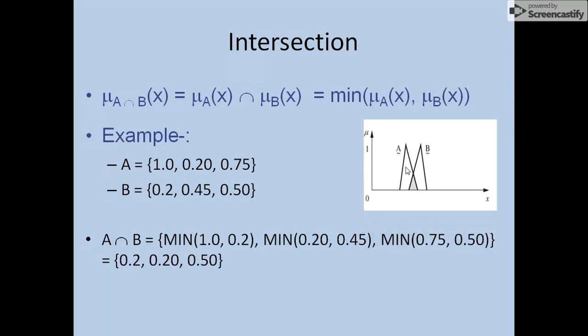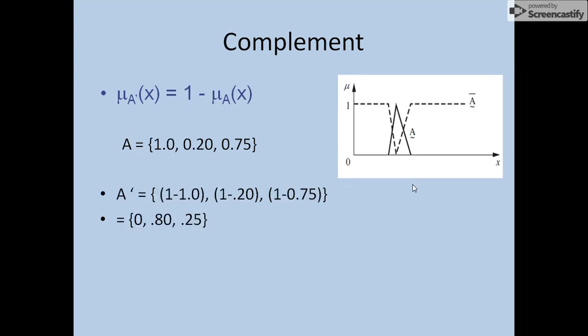The second operation is intersection. Intersection is basically the reverse of union — in union we get the maximum value, while in intersection we get the minimum value. The same operation is performed on sets A and B, but now instead of finding the maximum of the two corresponding values, we find the minimum. So minimum of 0.1 and 0.2 is 0.2, minimum of 0.20 and 0.45 is 0.20, minimum of 0.75 and 0.50 is 0.50. In the pictorial representation, we get the minimum value.